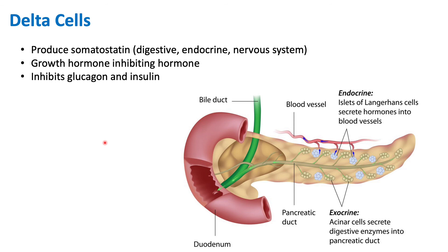Somatostatin acts as a third-party fine-tuner between glucagon and insulin to ensure proper glucose levels in the bloodstream. In summary, the islets of Langerhans contain alpha cells, beta cells, and delta cells, which work together to maintain proper glucose levels. The pancreas is unique in that it can act as both an endocrine and an exocrine organ.